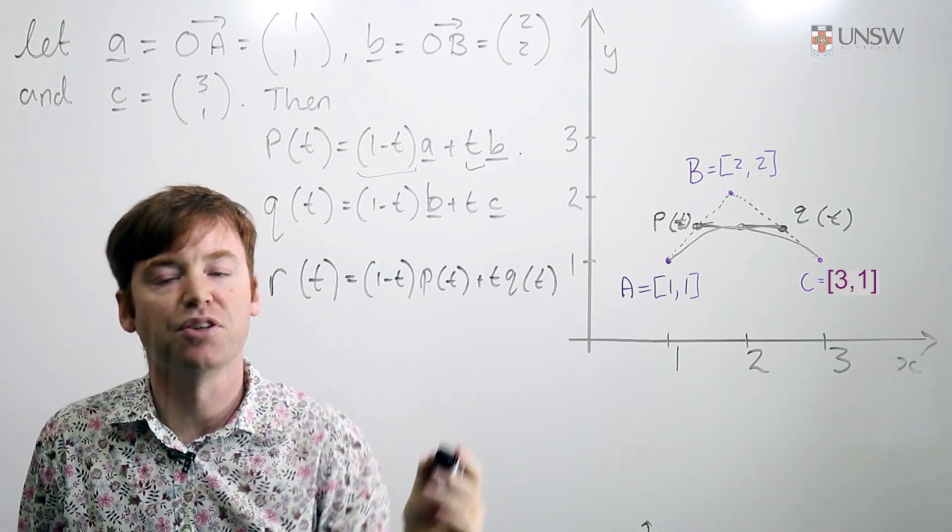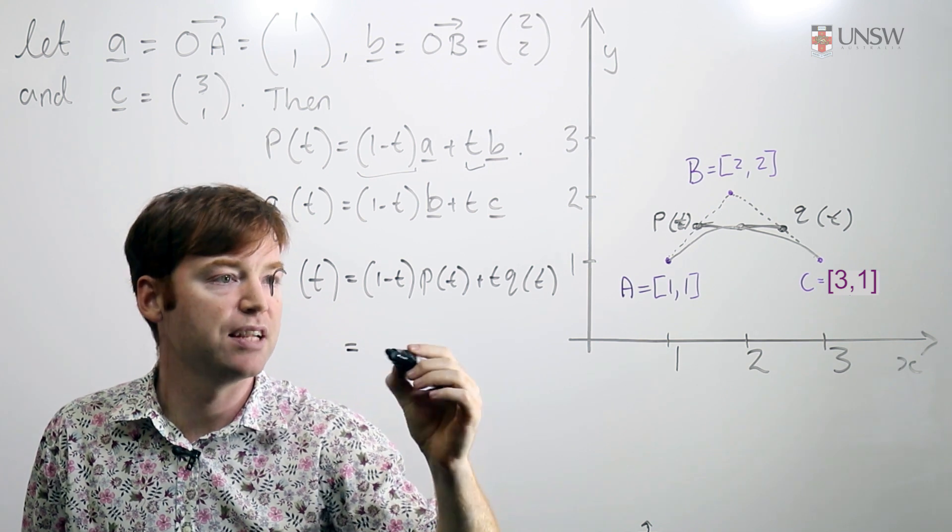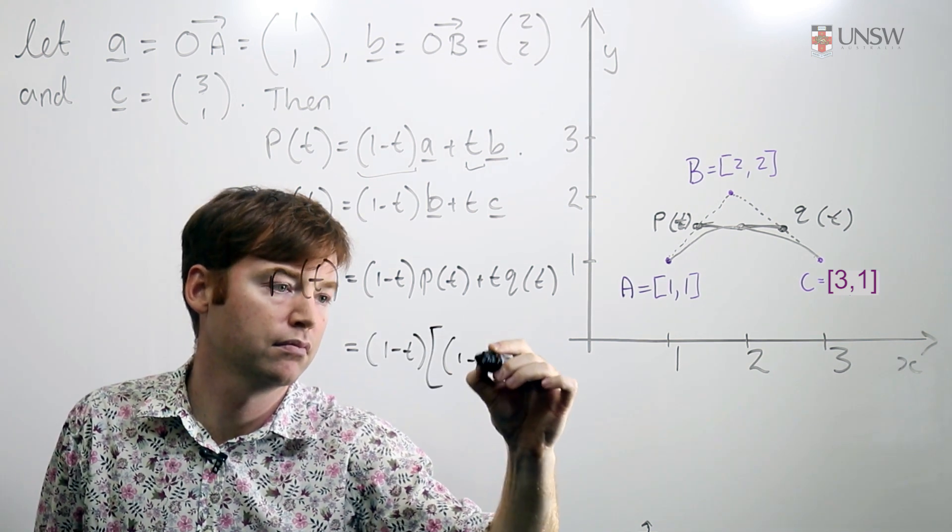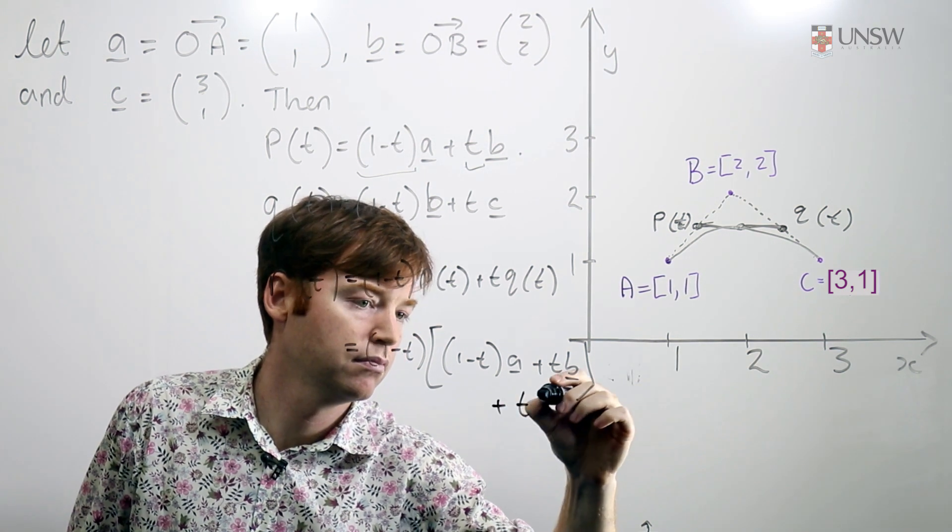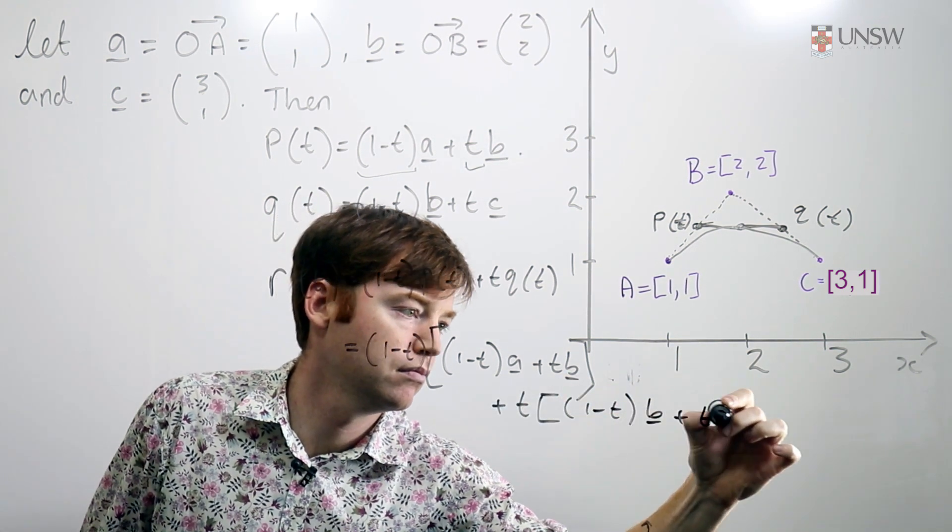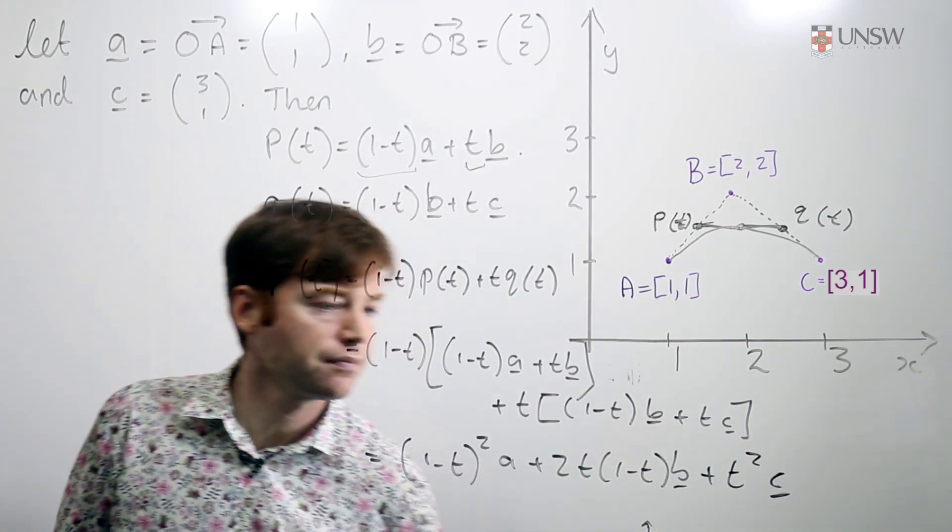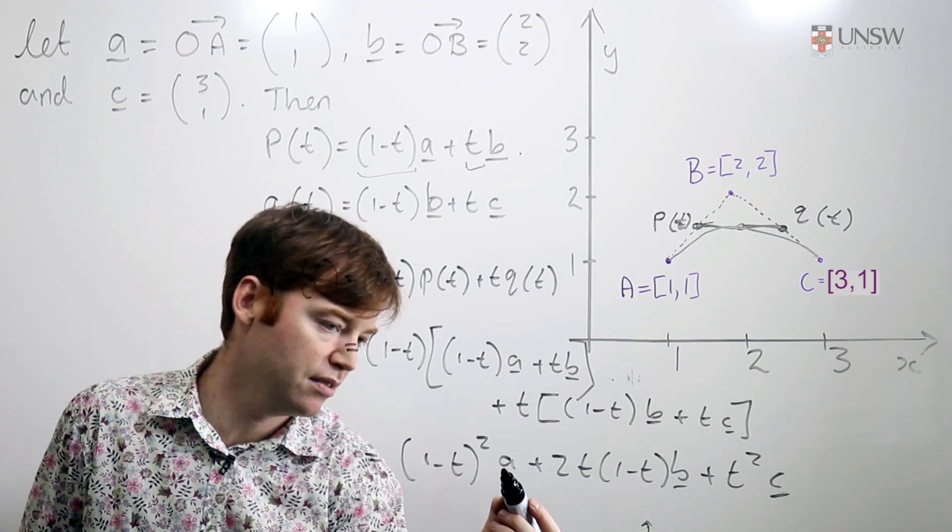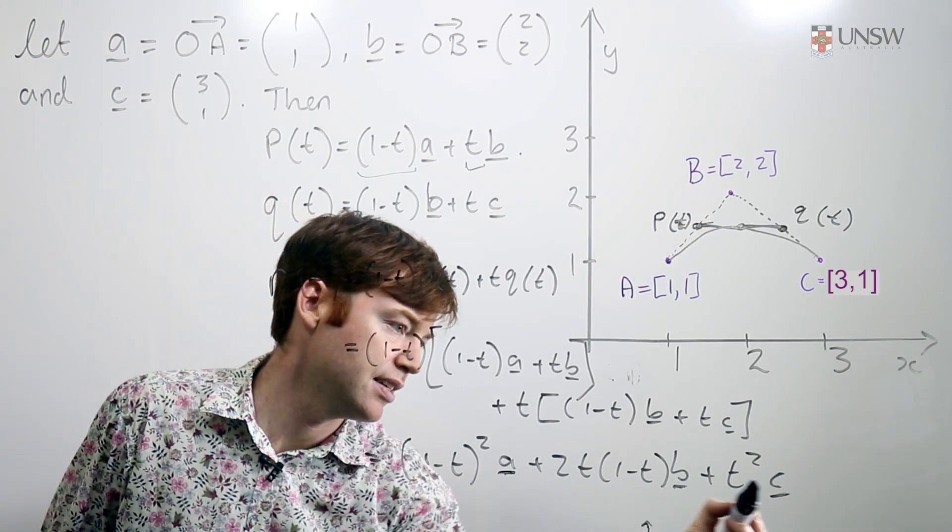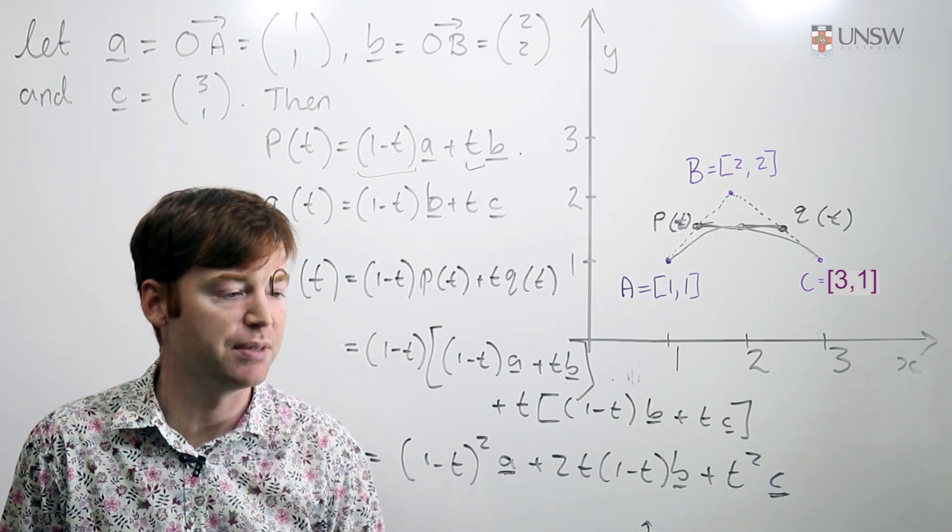So let's express this in terms of the points a, b, and c. And now I've expressed r of t in terms of these a's, b's, and c's, the coordinate vectors for what I'm calling the control points a, b, and c.